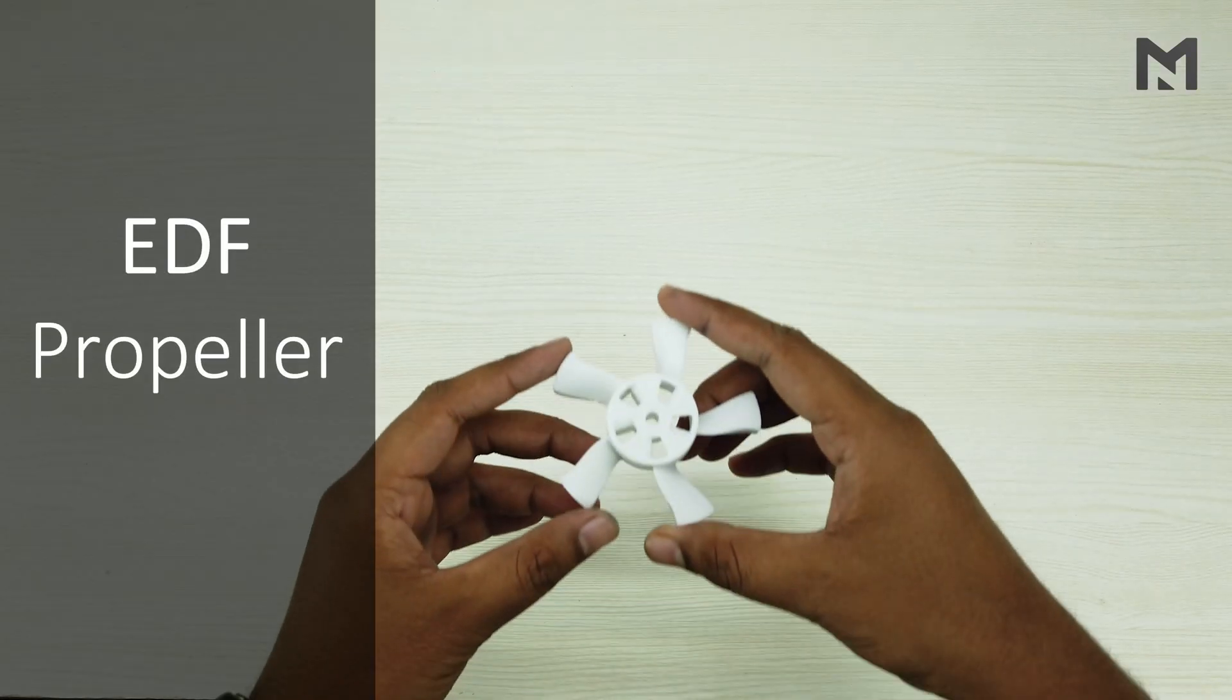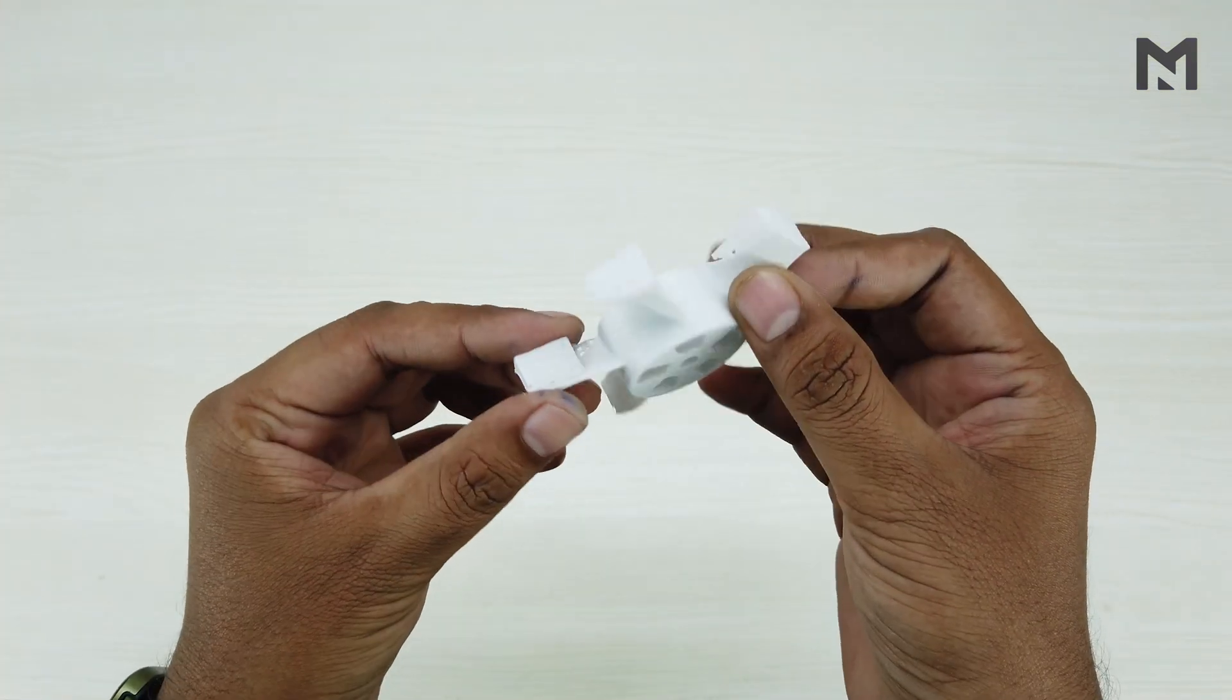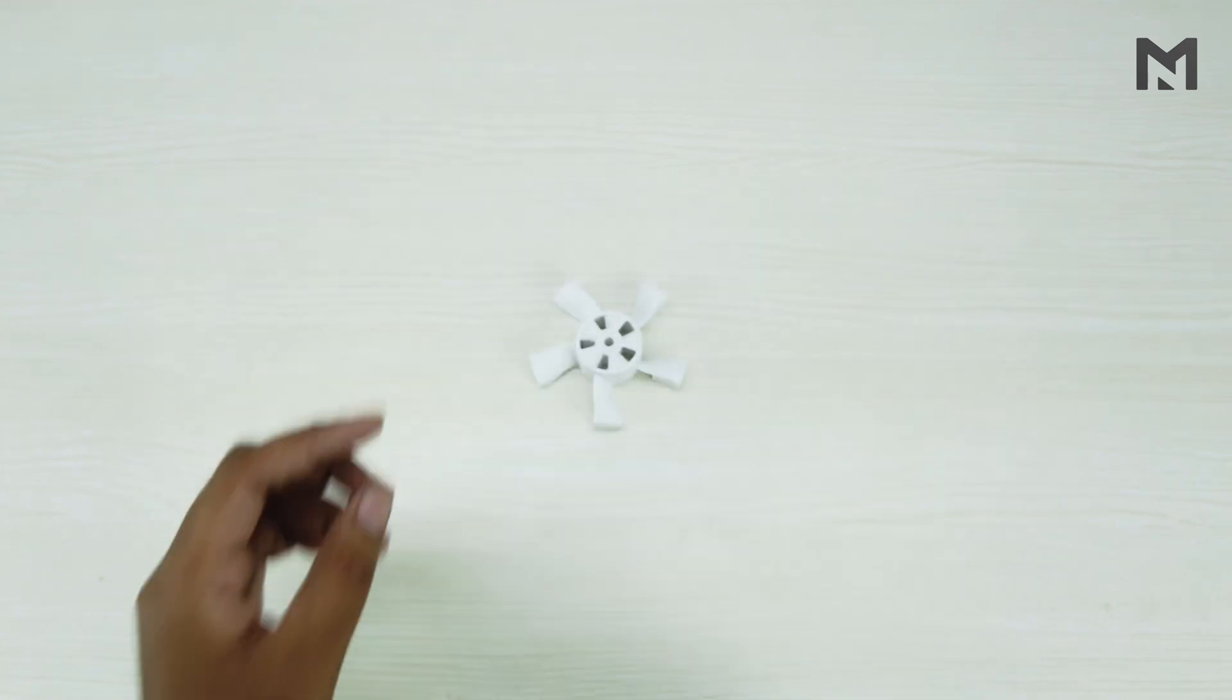Let's start putting the EDF together. All the parts were 3D printed with a layer height of 0.2mm and a 30% infill. For propellers and outer casing, use support generation.